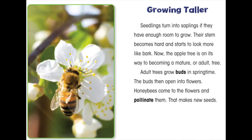Seedlings turn into saplings if they have enough room to grow. Their stem becomes hard and starts to look more like bark. Now the apple tree is on its way to becoming a mature or adult tree.